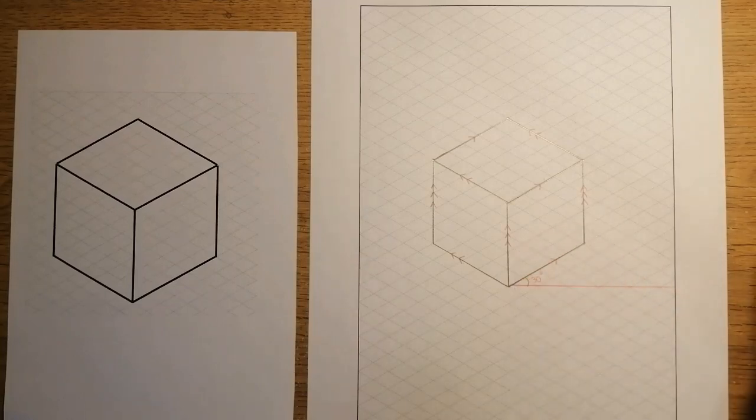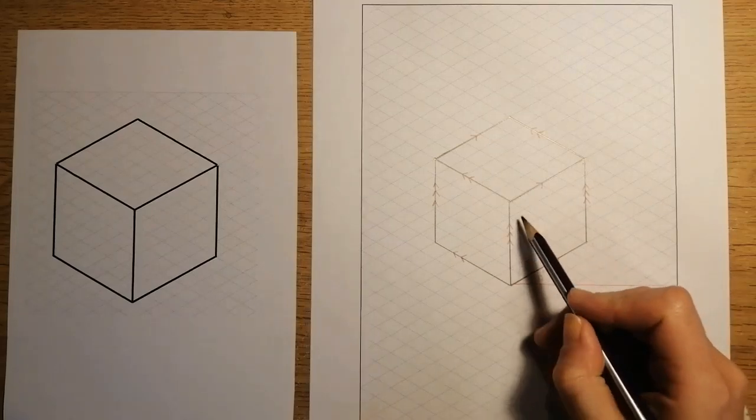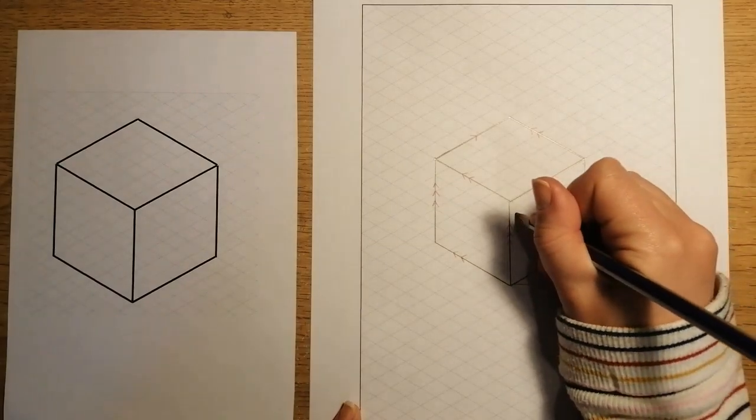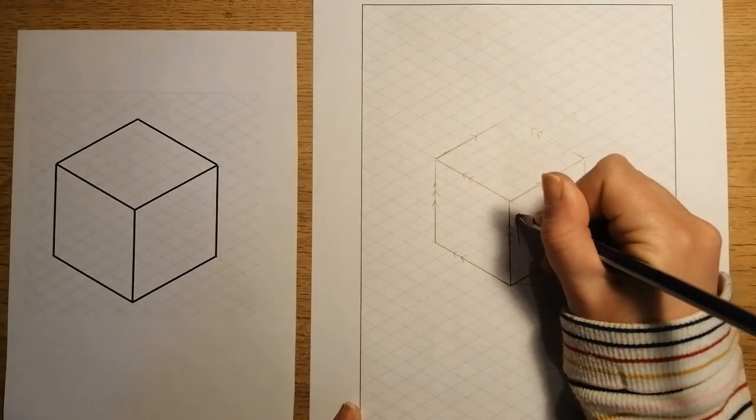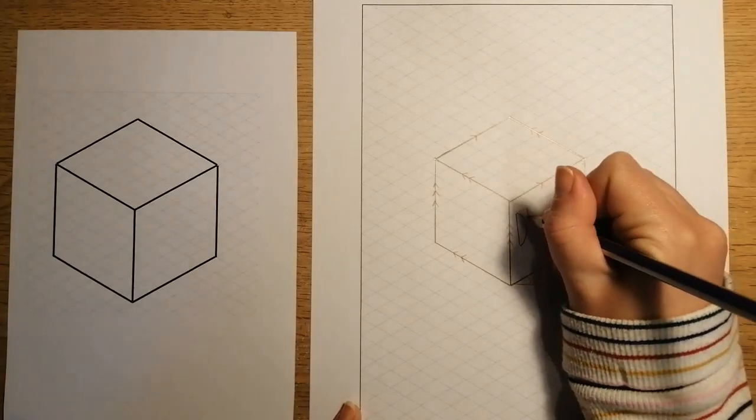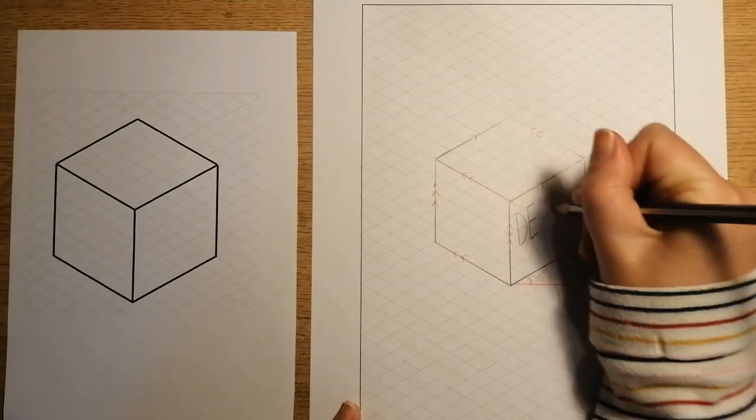For example, if I was to add some writing here, I would make sure that my writing meets the top and bottom of a guideline. So if I were to write the word design, for example, I would make sure that my upwards lines are vertical, but any horizontal lines of the text follow the guidelines.